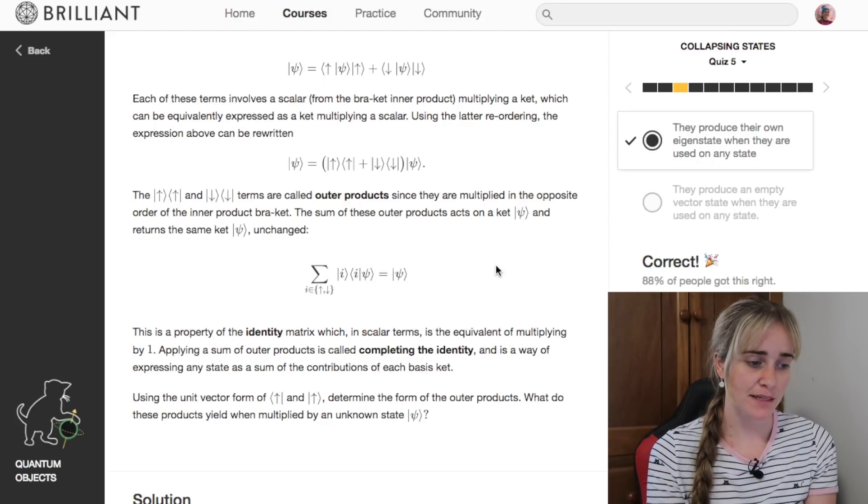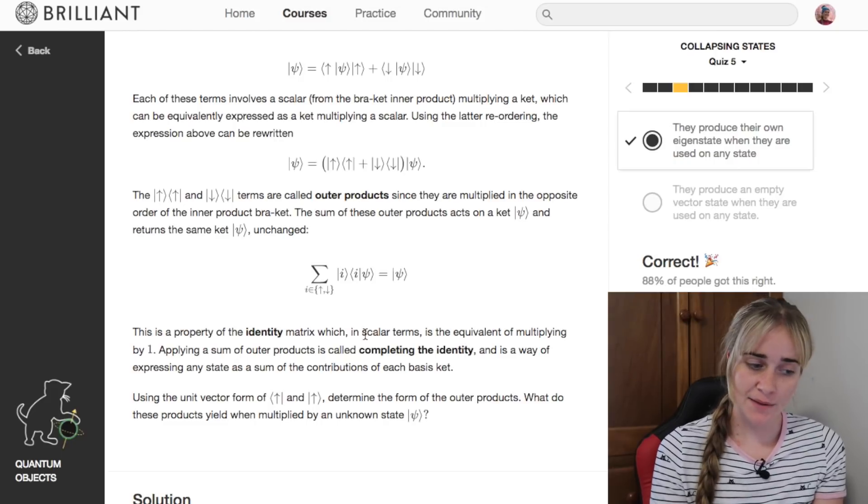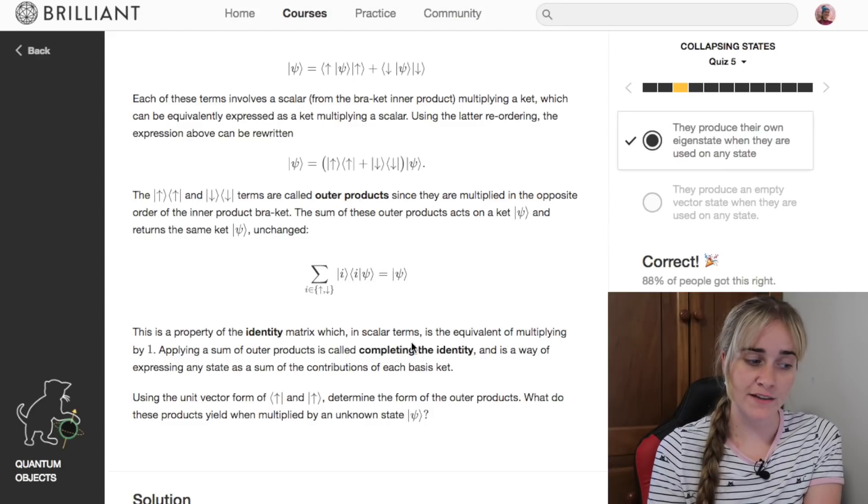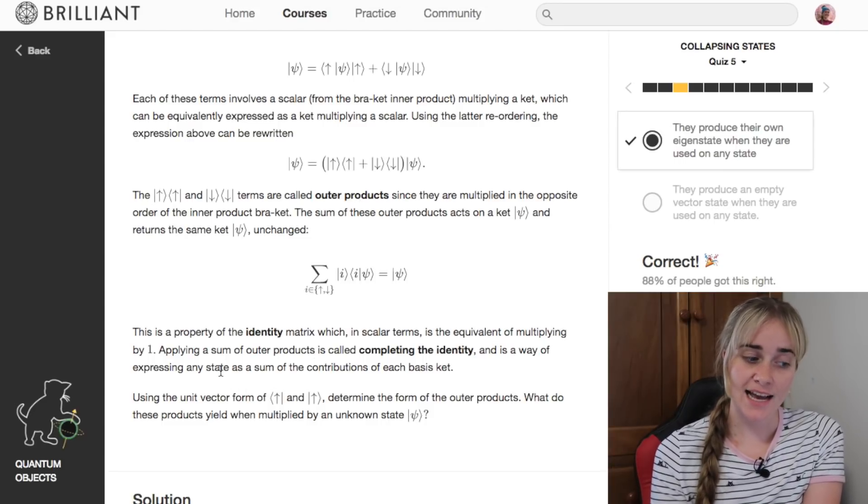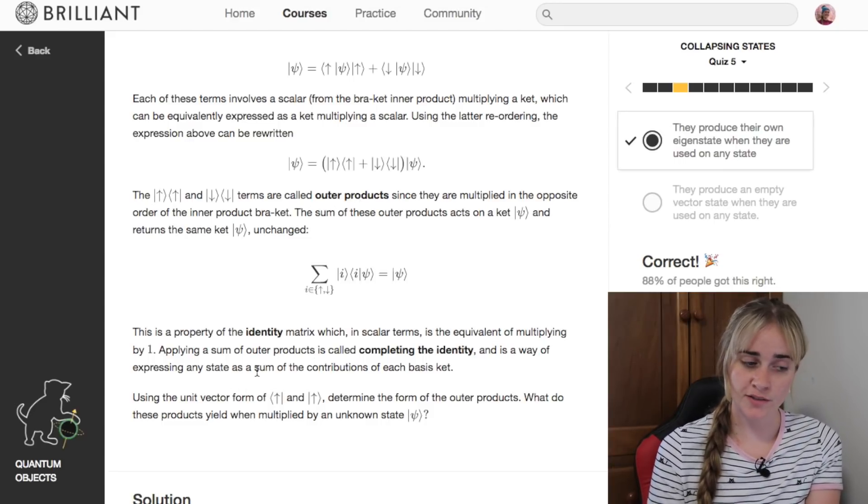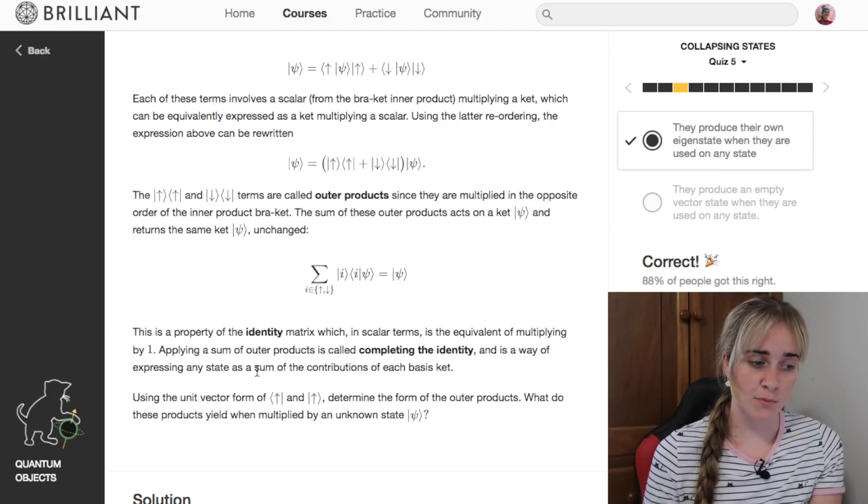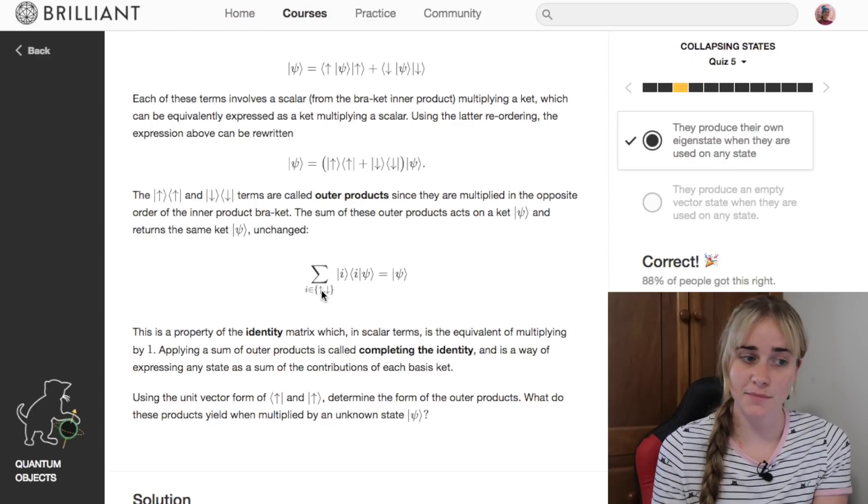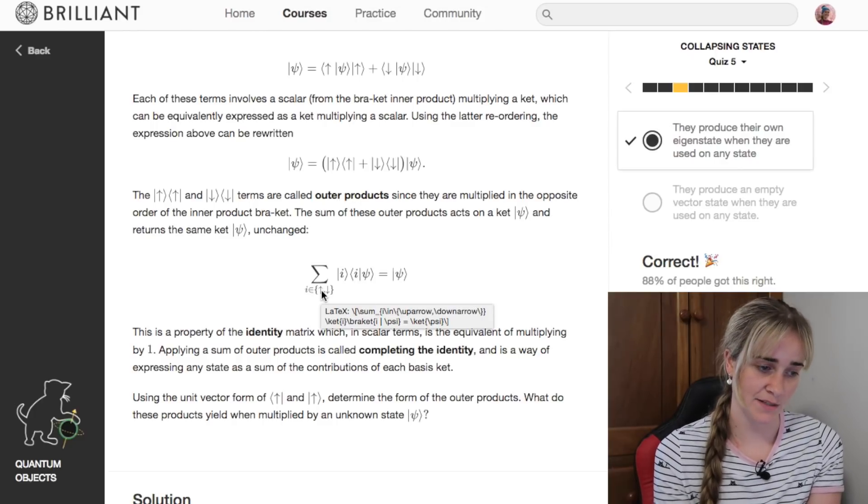This might seem a little bit pointless, but it can come in handy because applying a sum of outer products is a way of expressing any state as a sum of the contributions of each basis ket. So it's a way of writing out the state in terms of everything that makes it up, and you might see that comes in useful later.